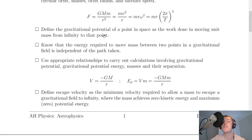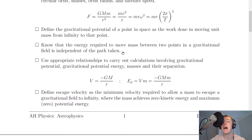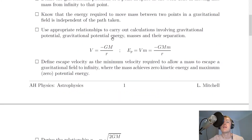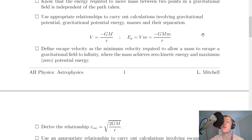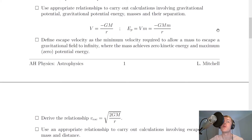You need to define gravitational potential as the work done in moving unit mass from infinity to that point. We define infinity to be the point of zero energy. The energy required to move a mass between two points in a gravitational field is independent of the path taken — it's a conservative field. For gravitational potential: V equals minus GM over R. For gravitational potential energy: Ep equals V times m, or minus GMm over R. The negative sign arises from the direction of gravitational force and our definition of infinity as zero joules.